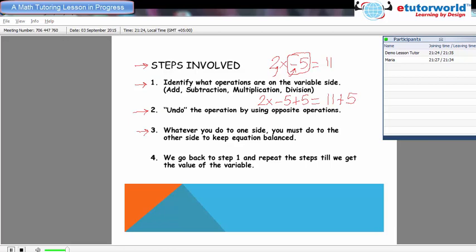So we have added 5 to the left side and to the right side as well. Now we simplify this. The negative 5 and the positive 5 becomes 0, so we can cancel that. So our 2x equals 16 now. Now step 4 is we go back to step 1 and repeat the steps. Now again we identify the operation. As you mentioned, it was multiplication. To undo this we will divide by 2 on both sides.